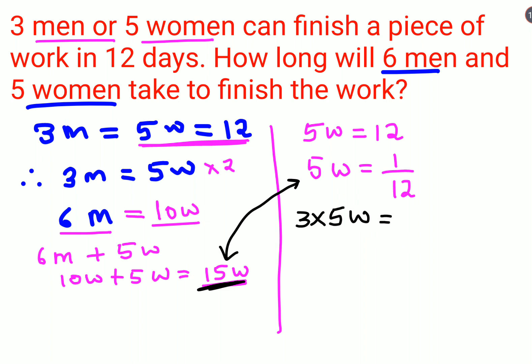Since I multiplied by 3 on one side of the equation, I need to multiply by 3 on the right hand side as well. So now I get 15 women.